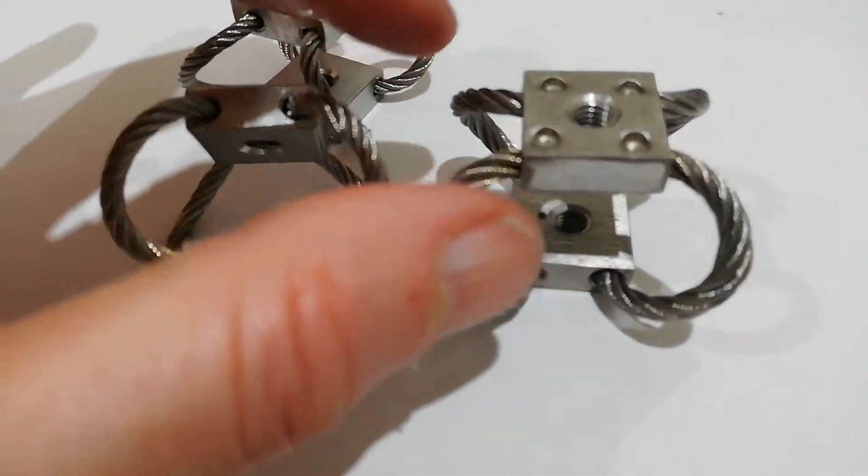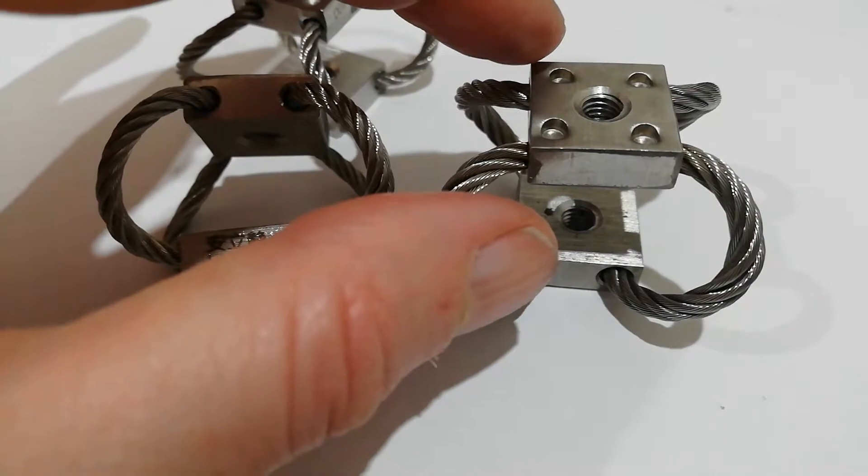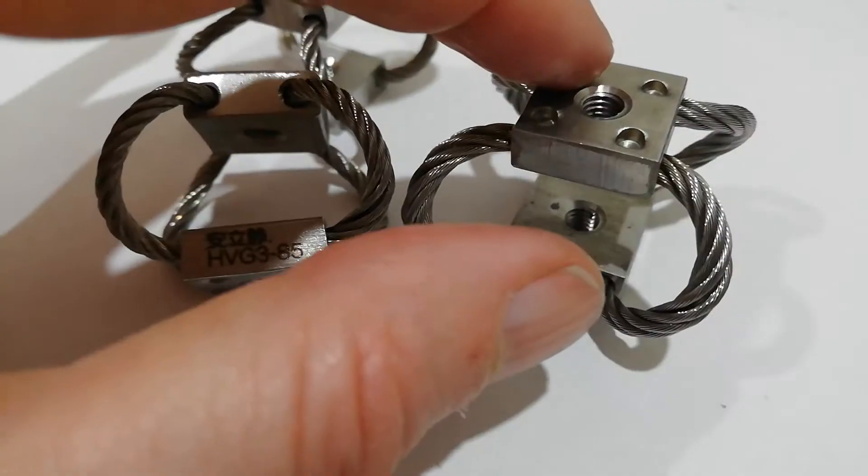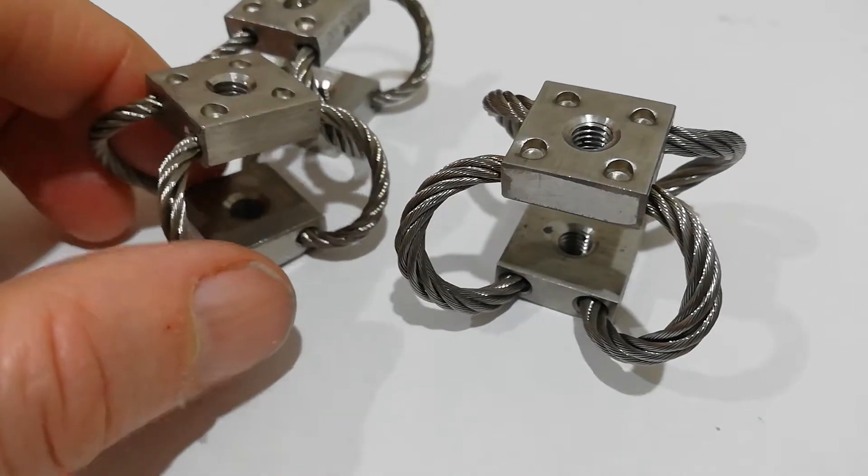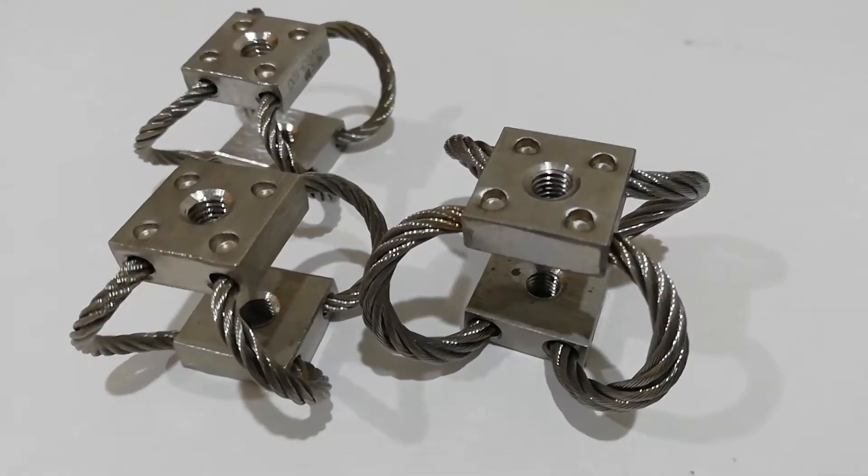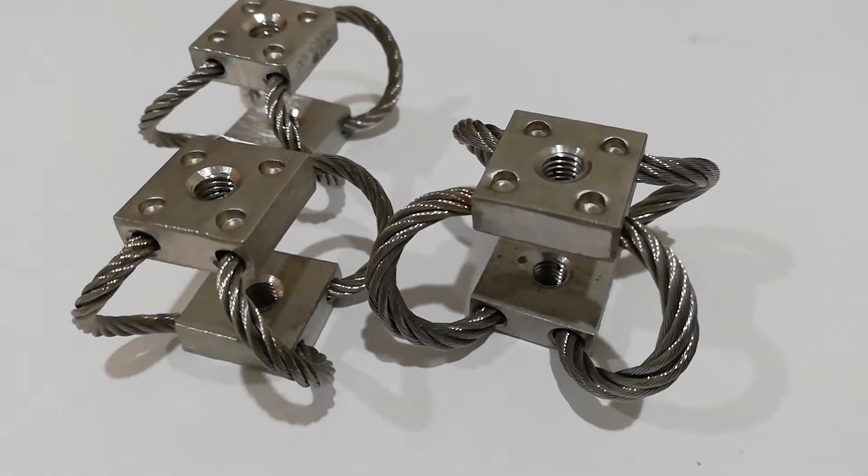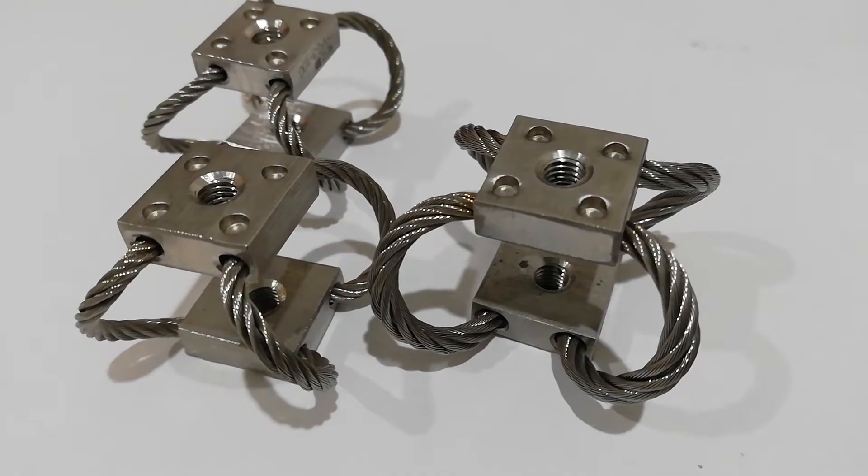Width is about 26 to 28 millimeters, and they take an M5 thread mounting hole on either end. You can see the full specification on our website, stopvibration.com.au. Thanks for watching the video.